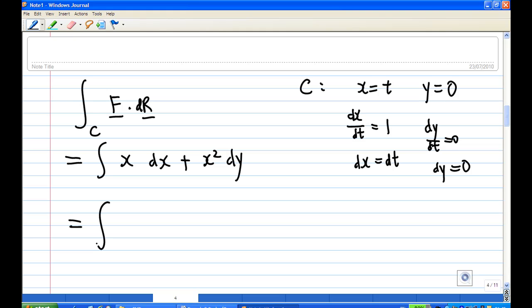So in the end, this integral will become x is equal to t, dx is equal to dt. Then x squared is t squared, dy is 0. So you don't need to worry because dy is 0 now. So you actually have integration of t dt.